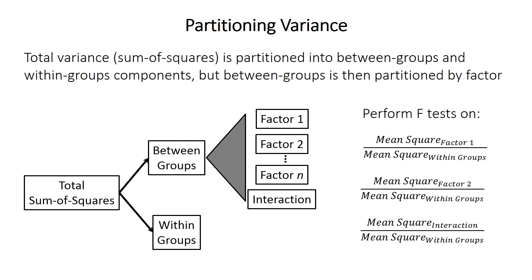Finally, statistical significance is assessed using F-tests on the ratio of the between-groups mean square for each factor relative to the within-groups mean square. There ends up being an F-test for each factor and each interaction that your test might include.